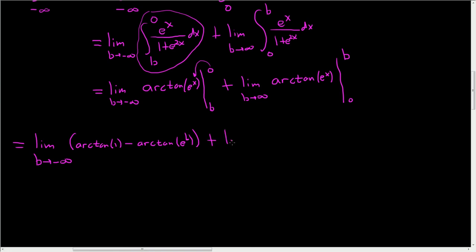Plus. And then we have another limit here. Except this limit is one where b is approaching infinity. We plug in the b first this time. So we get arctan e to the b. Minus and then arctan of e to the 0. Well, e to the 0 is 1. So we get arctan of 1.